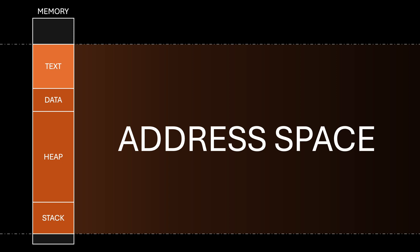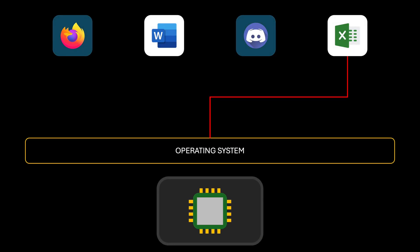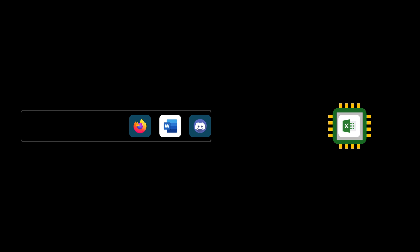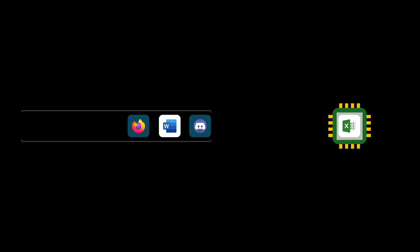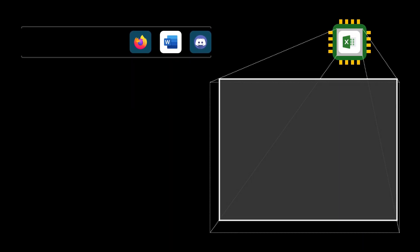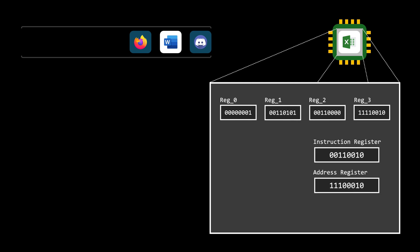A process, however, is more than just its address space. Modern operating systems use concurrency, allowing multiple processes to execute by alternating access to computer resources. Internally, alternating access to the CPU is achieved by placing processes in a queue. At any given moment, only one process can use the CPU, while all others wait their turn. The CPU has internal components like general-purpose registers, the instruction register, the address register also known as the program counter, the stack pointer, and even flags.